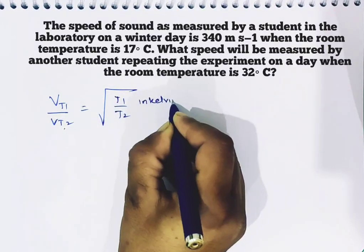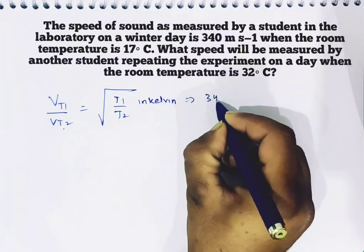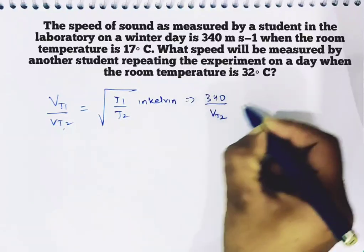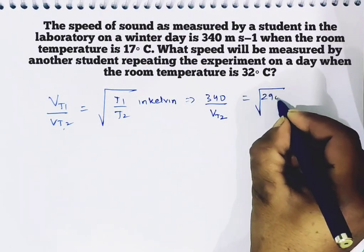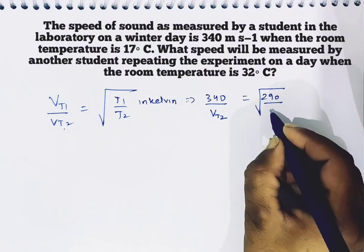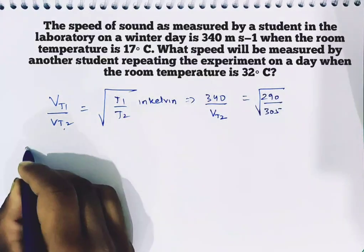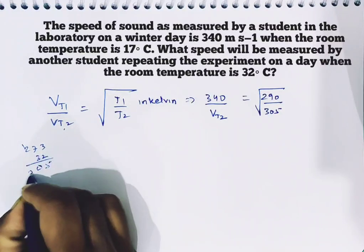So we can write the speed as 340 m/s at 17°C, that is 290 Kelvin. And the other temperature is 32°C, which is 273 plus 32 equals 305 Kelvin.